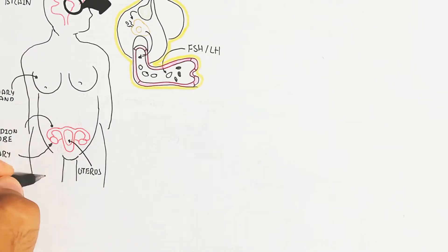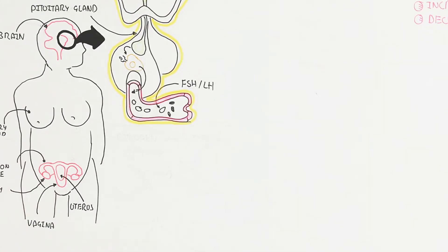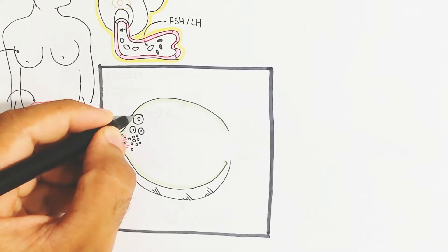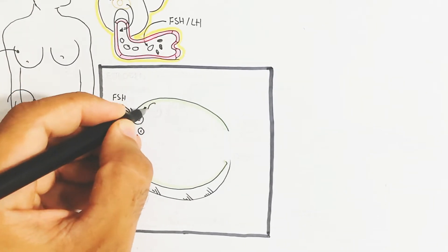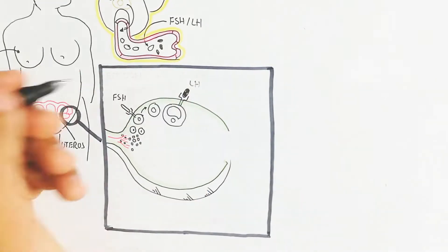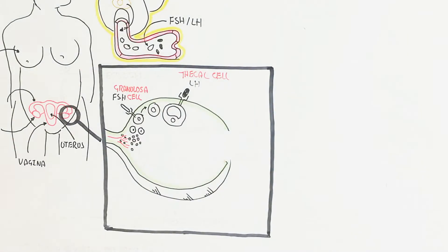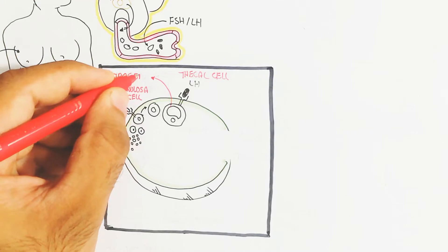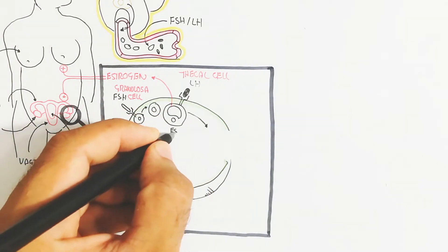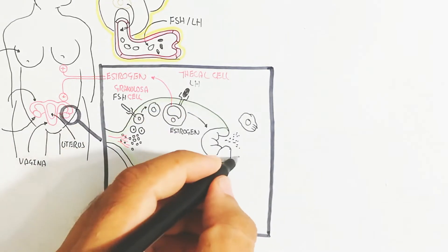Now we zoom into the ovary to understand ovulation and the menstrual cycle. First is the follicular phase: the follicle develops when FSH binds with the primary follicle to form a mature secondary follicle. The LH binds with the thecal cell, while FSH binds with the granulosa cell. In this way, estrogen is formed from the thecal cell due to LH binding.